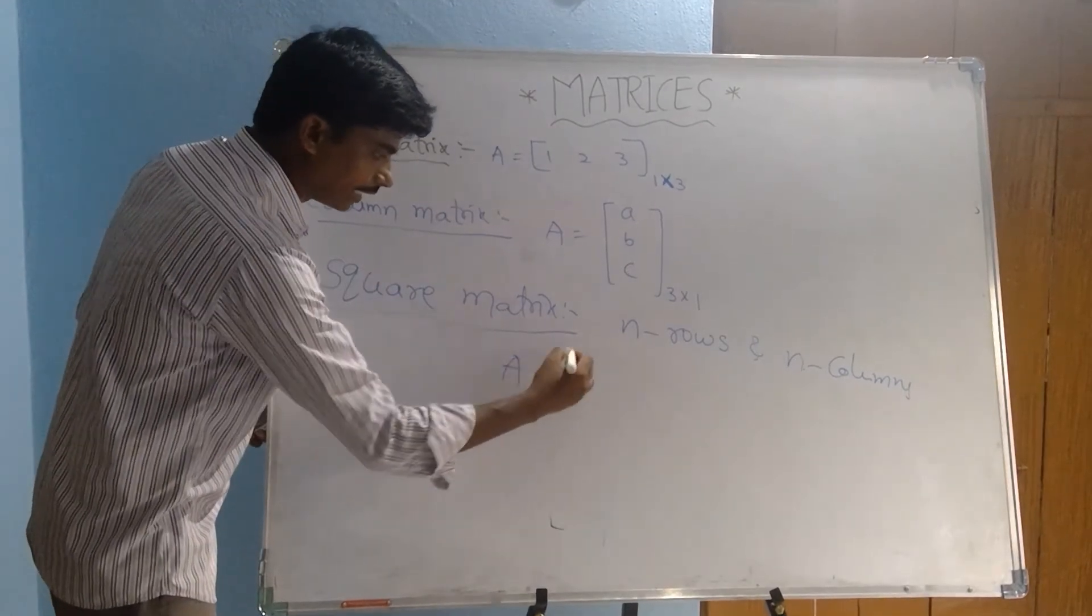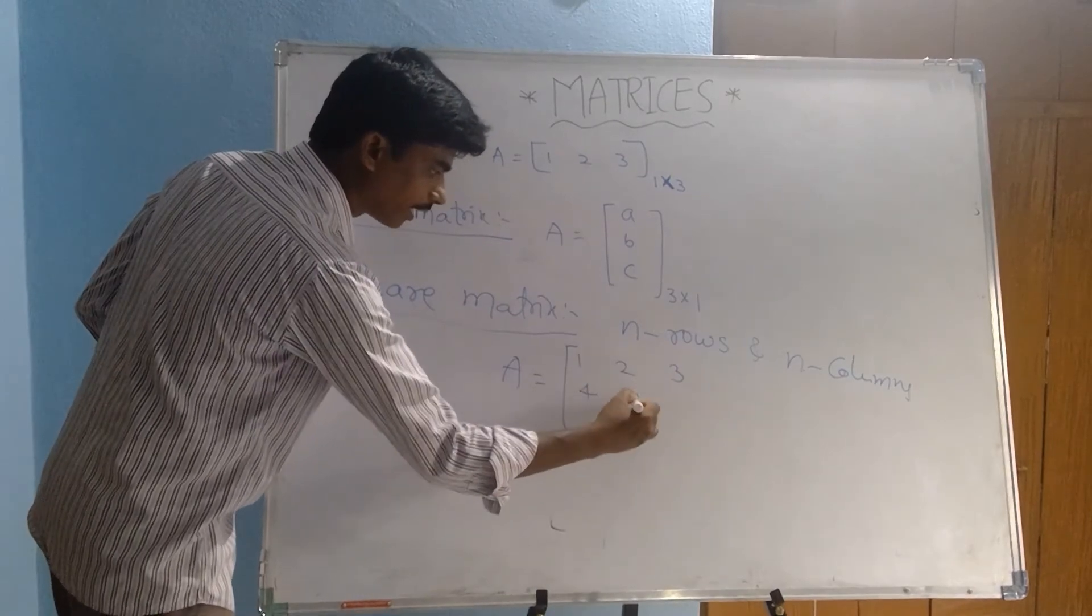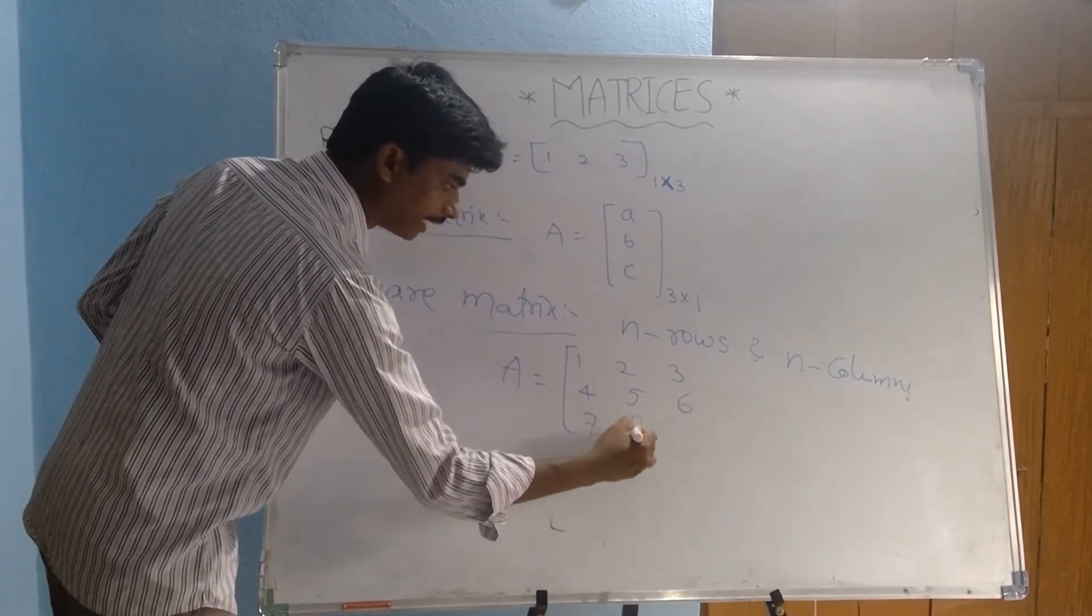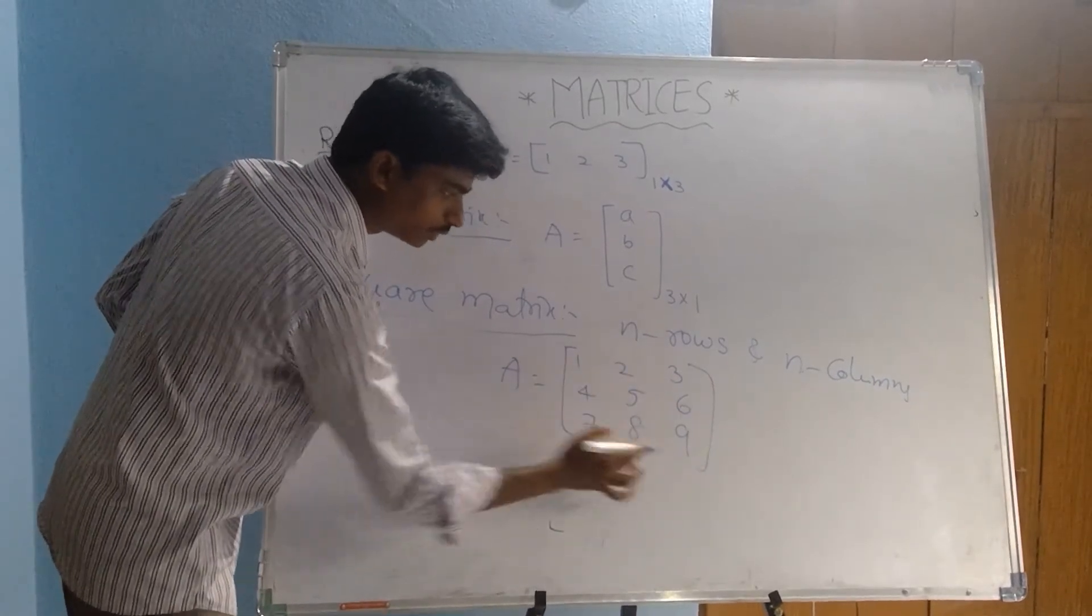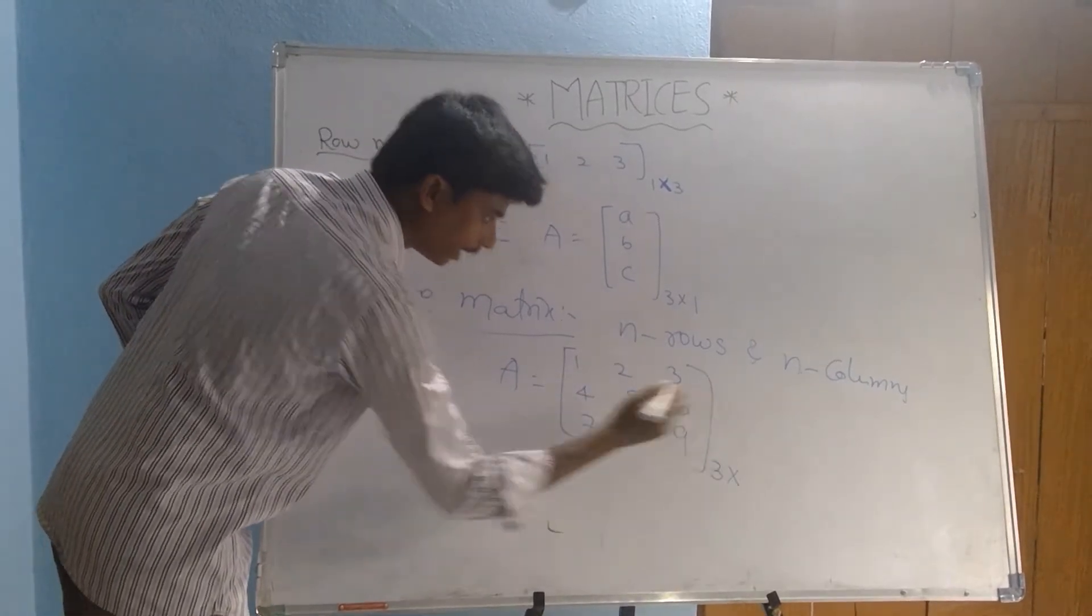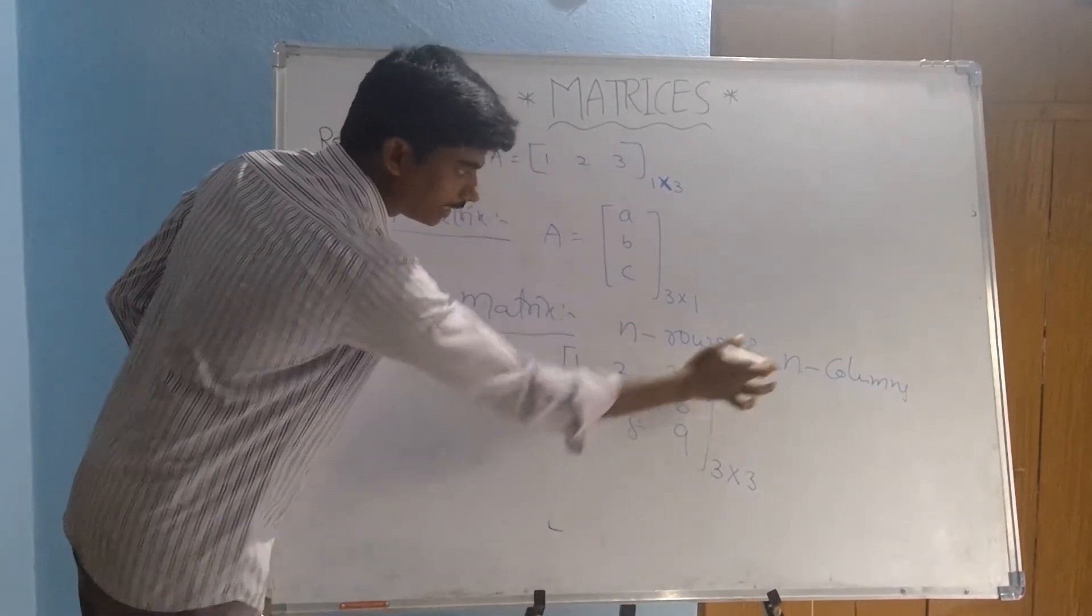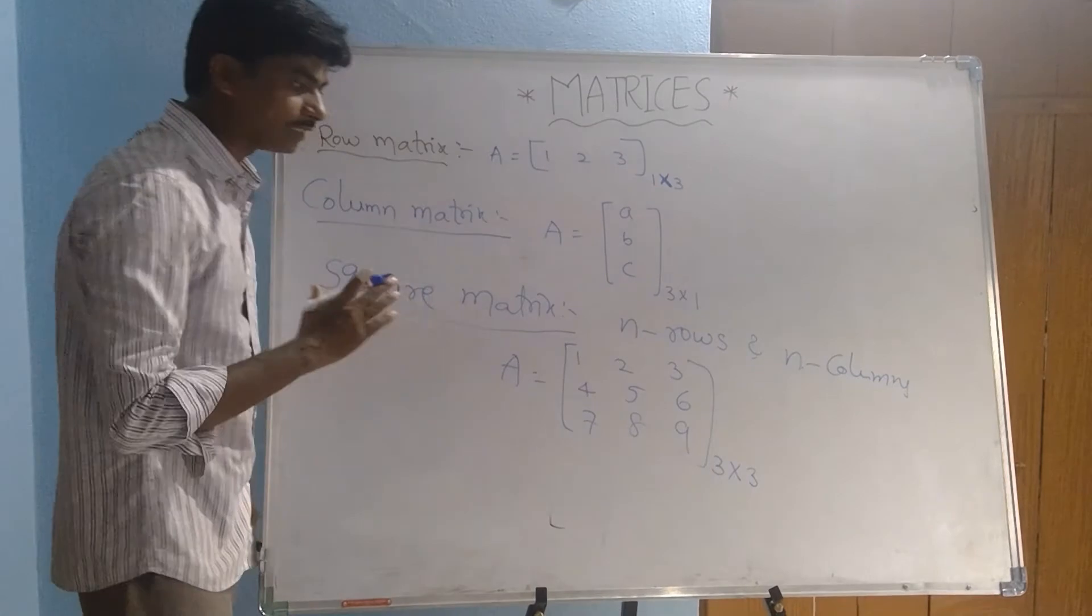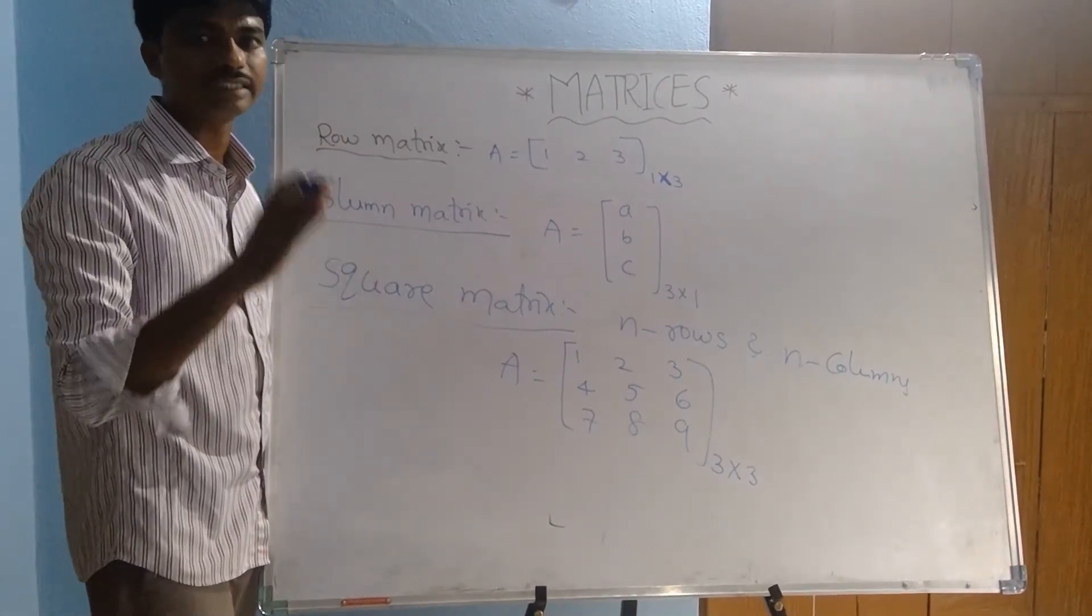Here is A equals 1, 2, 3, 4, 5, 6, 7, 8, 9. How many rows here? One, two, three. Three rows by three columns. Here N equal to 3 and N equal to 3. Three rows, three columns. This is called as square matrix. Square matrix always rows and columns equal.